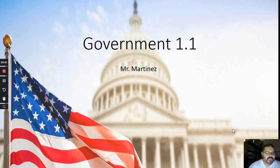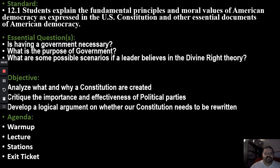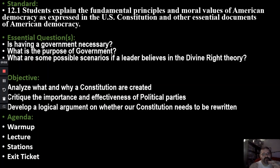So let's go ahead and get to your objectives — there they are. We're going to analyze what a Constitution is and why constitutions are created. We're going to critique the importance and effectiveness of political parties. And we're going to develop a logical argument on whether our Constitution needs to be rewritten. Now, we're not going to show you the whole Constitution, but just from reading the Preamble you'll have a good idea of the style it's written in.